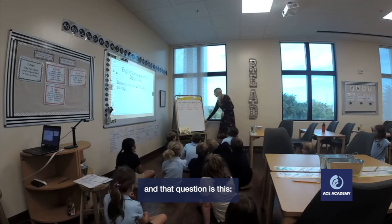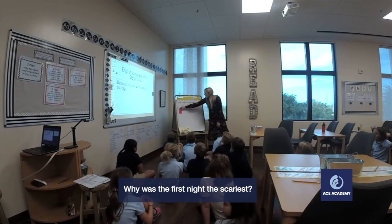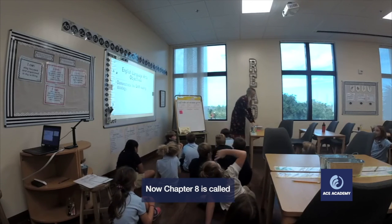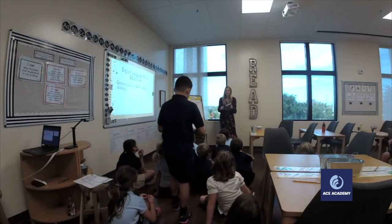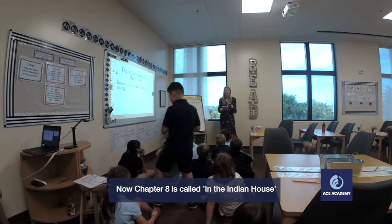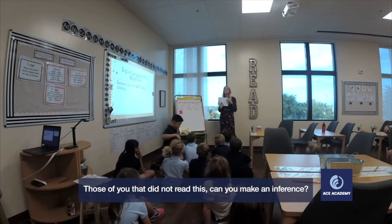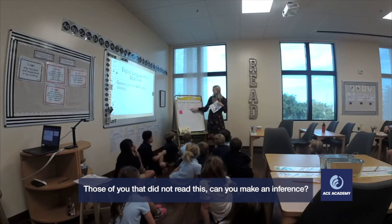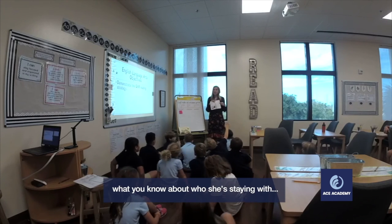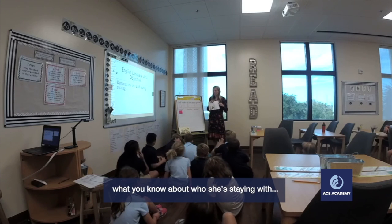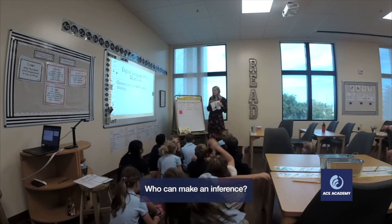And that question is this: Why was the first night the scariest? Chapter 8 is called 'In the Indian House.' Some of you might have read this. Those of you who did not read this, can you make an inference? Or use your schema? What you know about Sarah Noble, what you know about who she's staying with — why might the first night be the scariest? Who can make an inference?